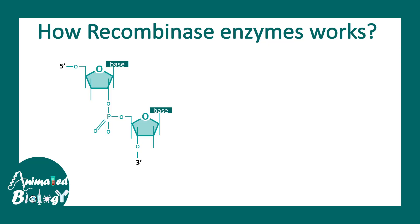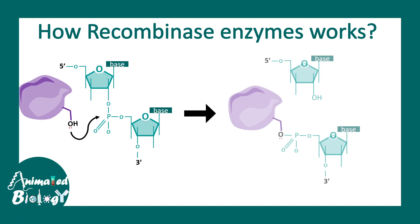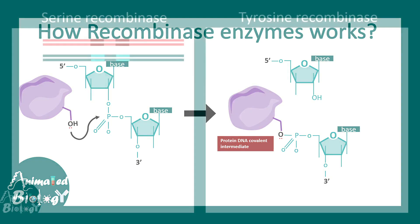Let's understand how the site-specific recombination reaction works. Here you can see a segment of DNA, and this is the site-specific recombinase which has a serine moiety. It has a nucleophile from the hydroxyl group that attacks the phosphate backbone, resulting in creation of an enzyme-DNA complex. These complexes are required to carry the reaction forward.